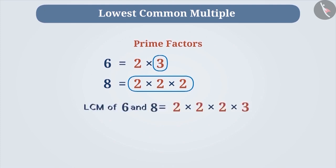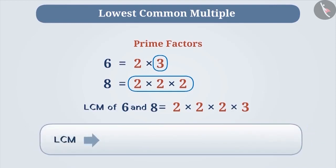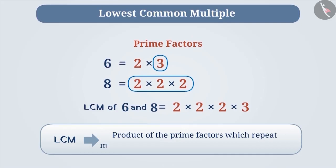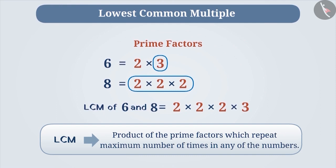In order to find the LCM of 6 and 8, we will find the product of the prime factors occurring in maximum numbers. Therefore, the LCM of 6 and 8 is 2 × 2 × 2 × 3, which is equal to 24.